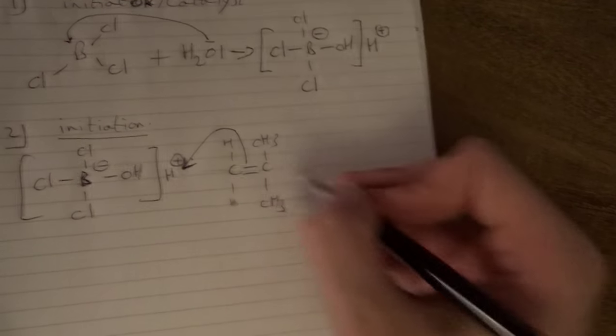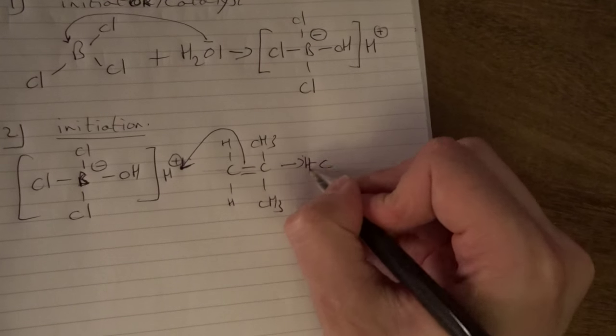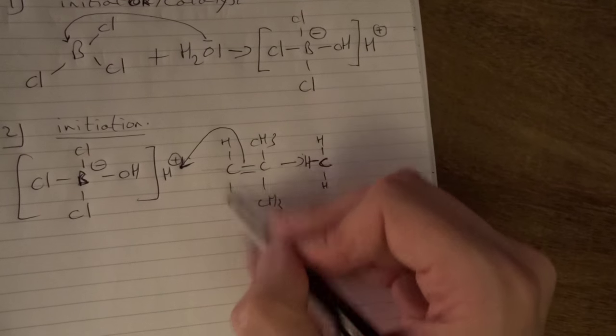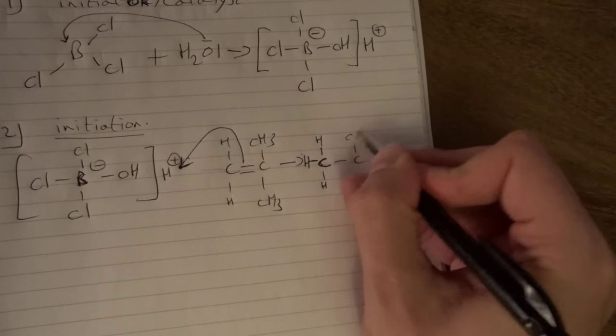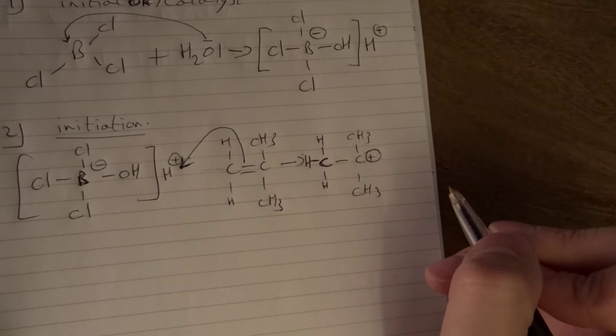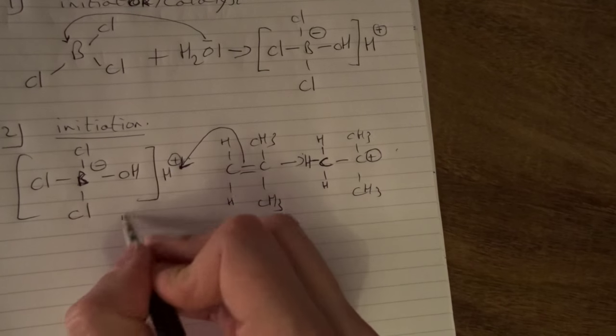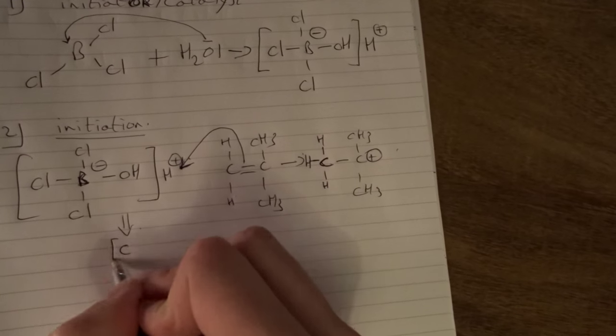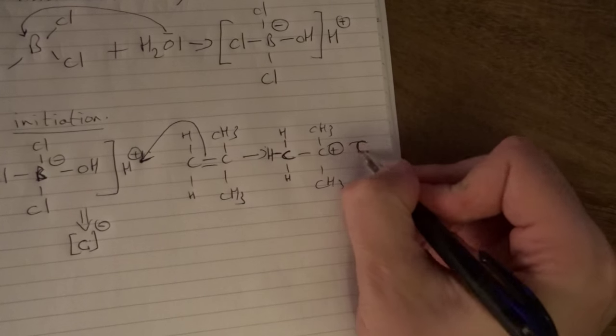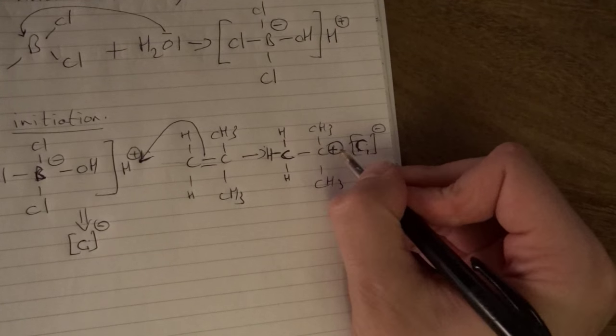We make a new covalent bond. We will see that here where this H makes a covalent bond with the C and the two existing H atoms and the rest of the molecule, which will yield the positive charge. And now we will abbreviate something. This part we will abbreviate to the counter ion, whatever negative charge, the counter ion which will be positioned here. So that's the first step.